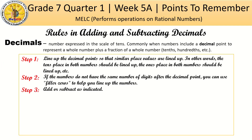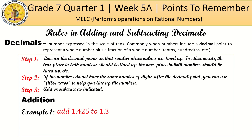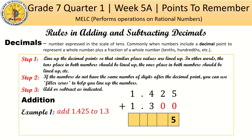Let's have the addition example. Example number 1: add 1 and 425 thousandths plus 1 and 3 tenths. Write them aligned by decimal point. Then add filler zeros where needed. 5 plus 0 is 5. 2 plus 0 is 2. 4 plus 3 is 7. Copy the decimal point. 1 plus 1 is 2. We now have 2 and 725 thousandths.